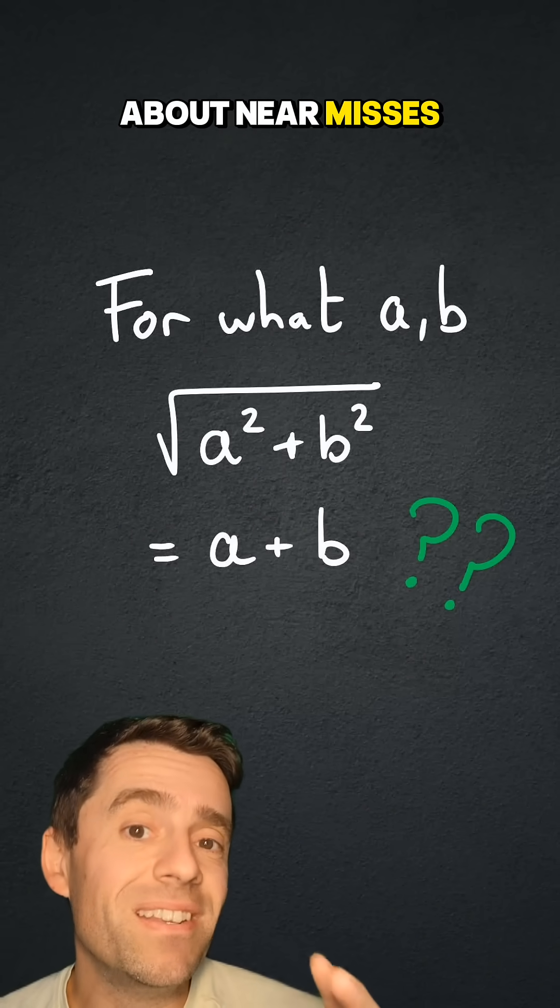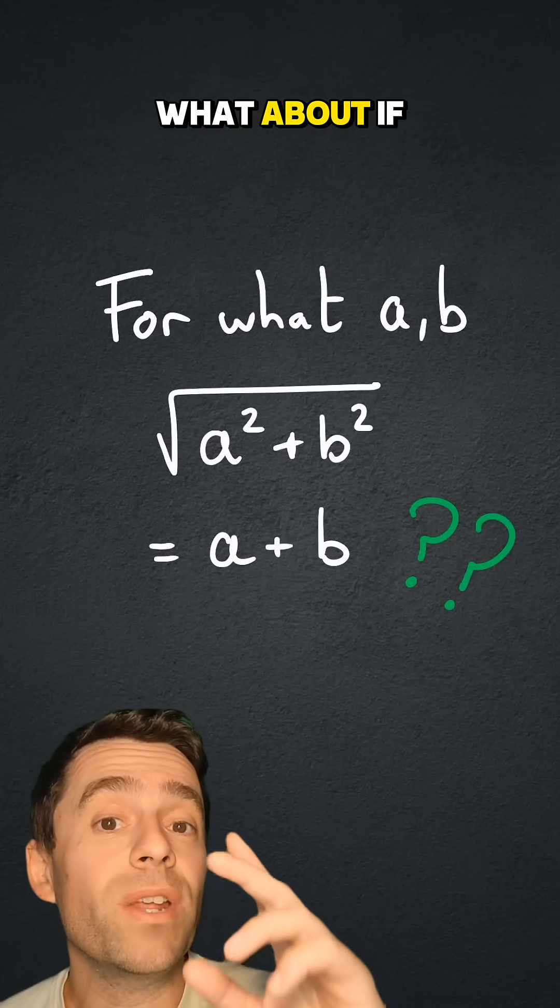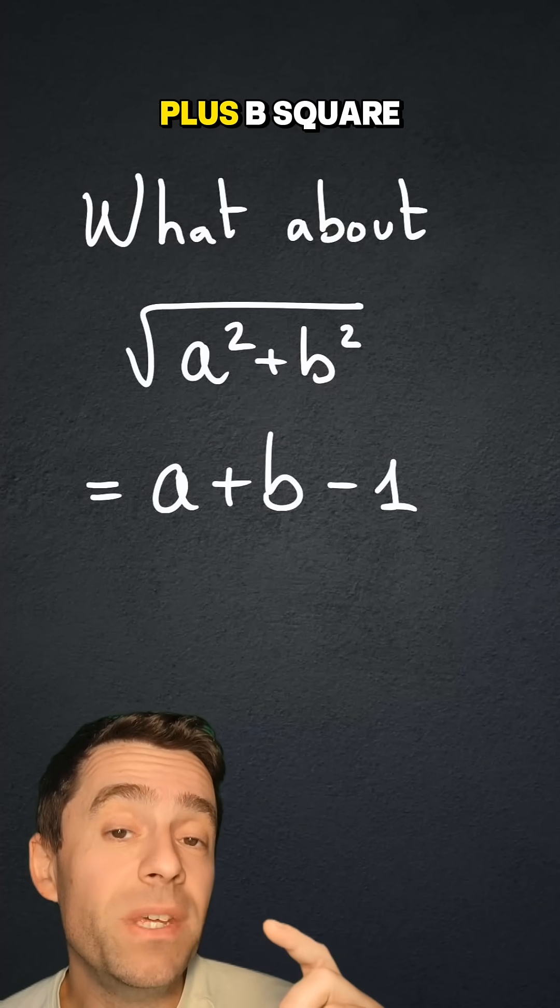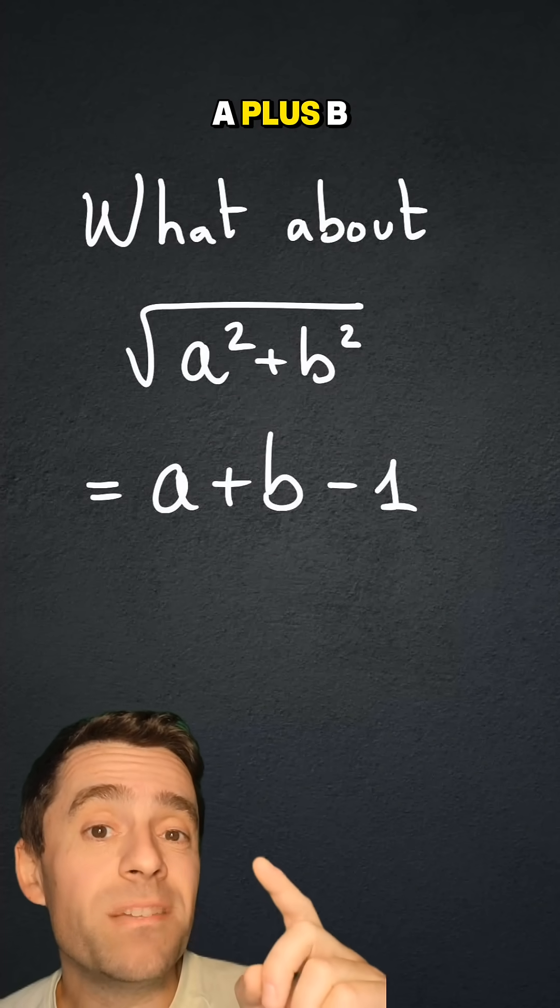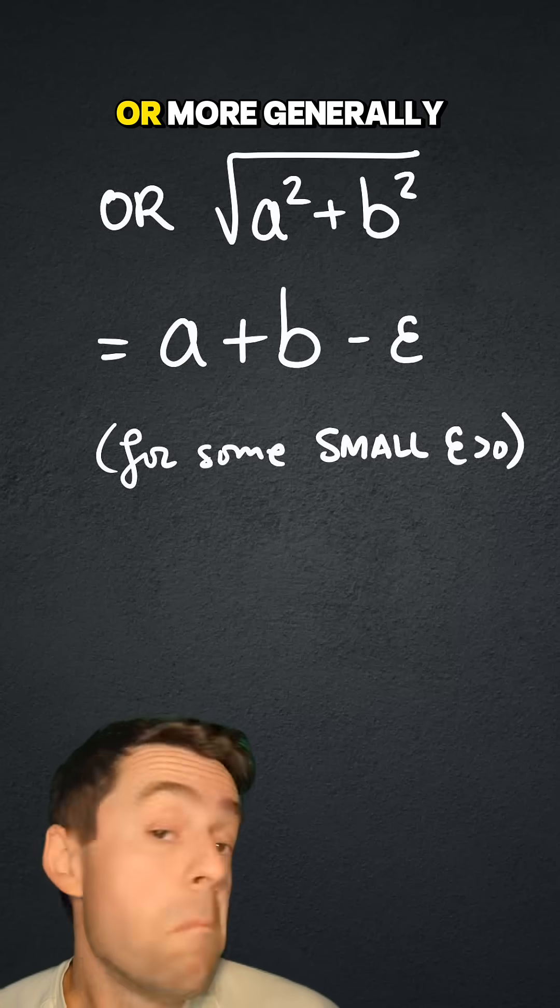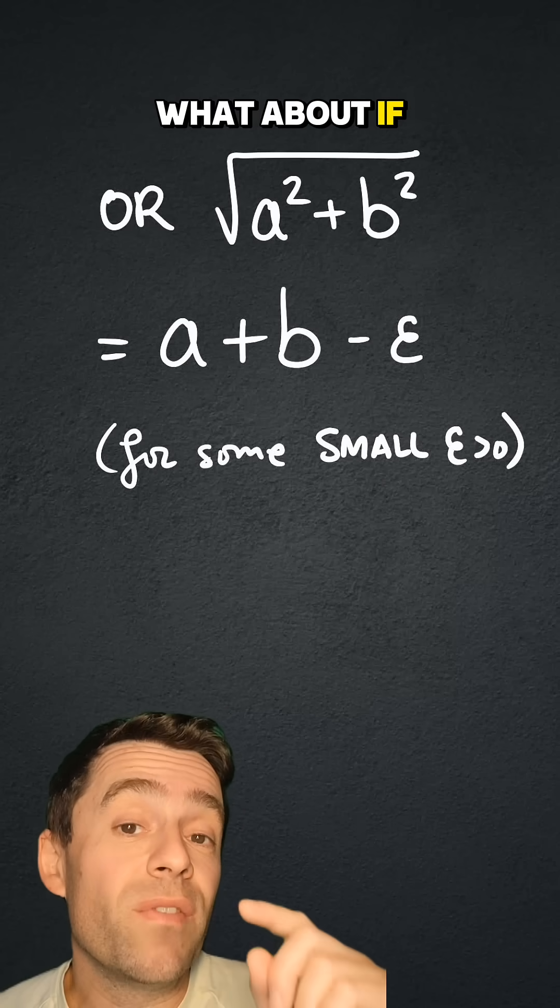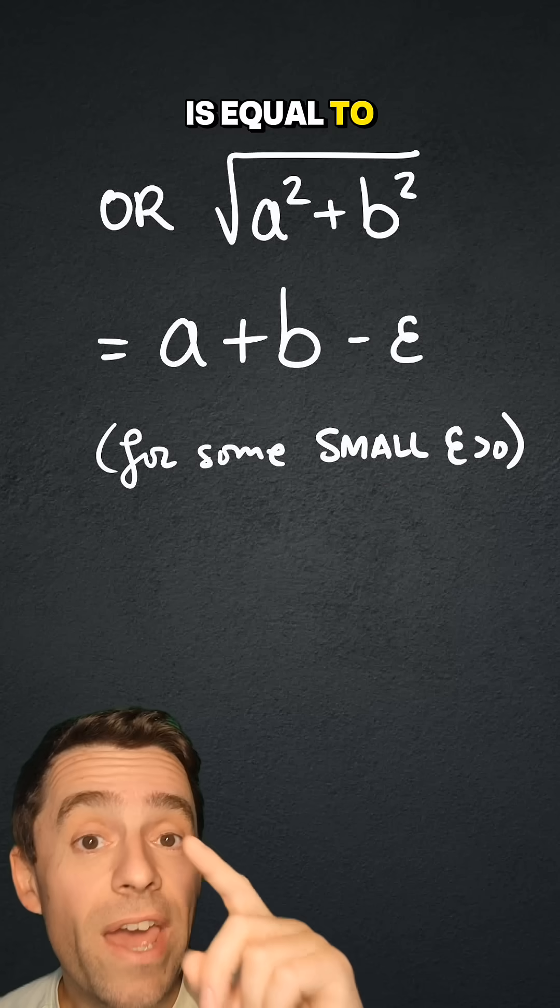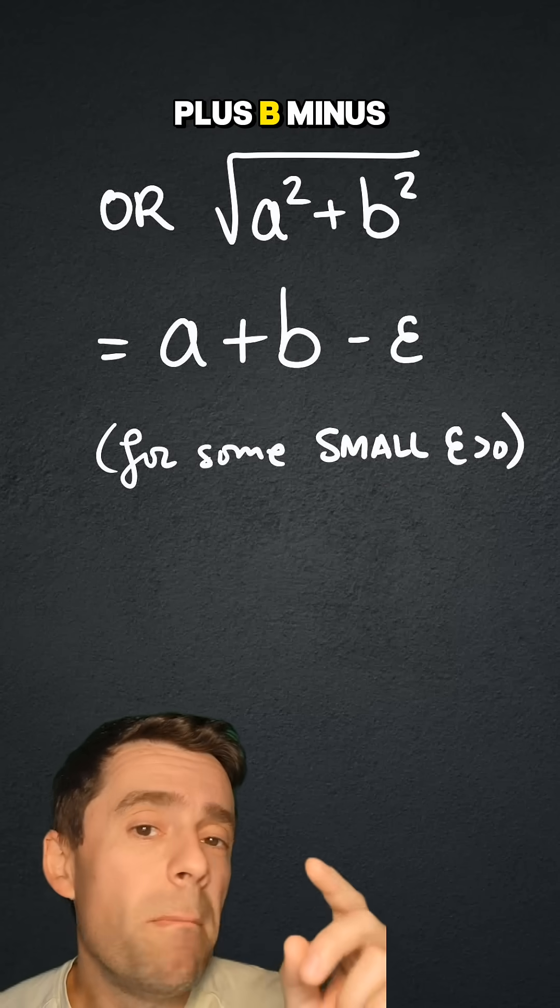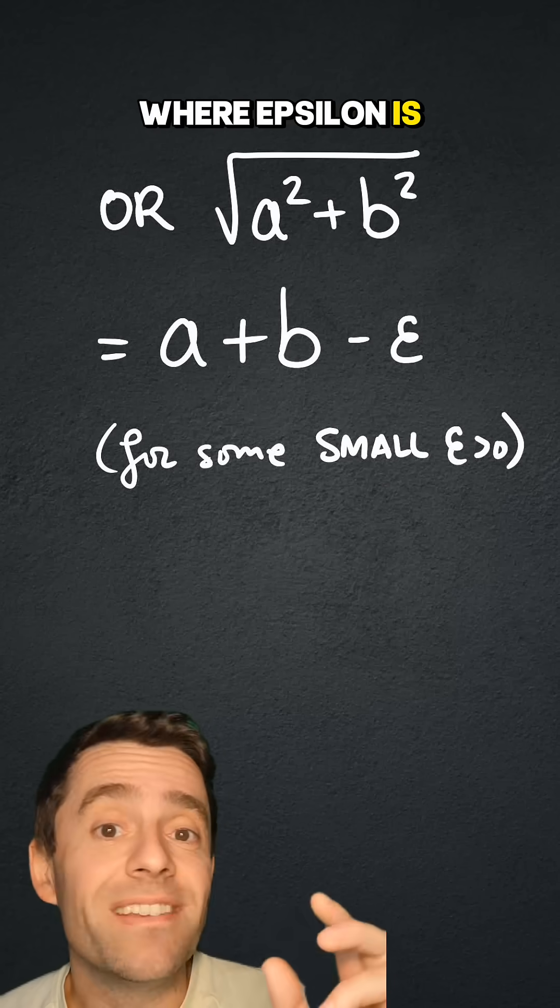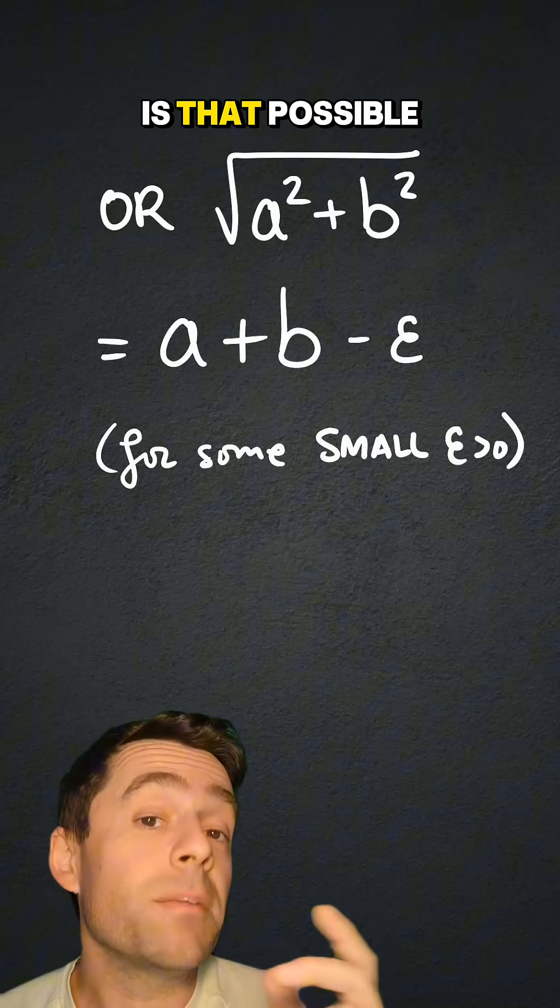So then what about near misses for this equation? What about if the square root of a squared plus b squared was equal to a plus b minus 1? Or more generally, what about if the square root of a squared plus b squared is equal to a plus b minus epsilon, where epsilon is some very small quantity? Is that possible?